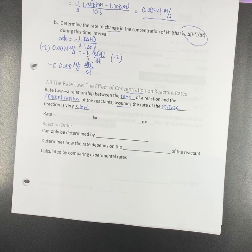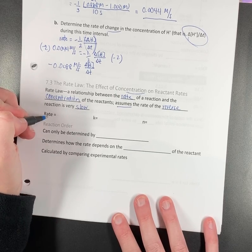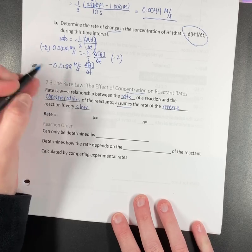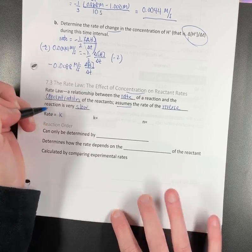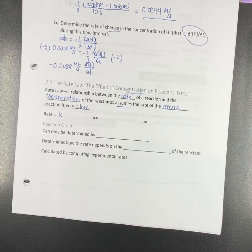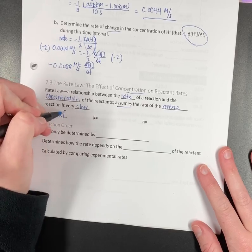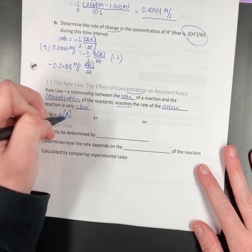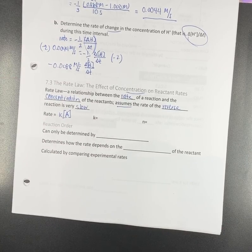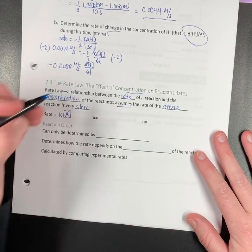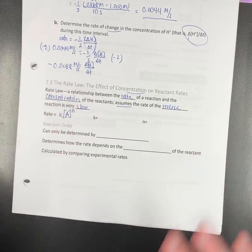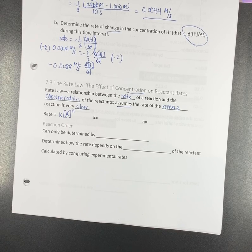Now when you write a rate law, the rate law is always going to be in this format: rate equals. So it's a rate equals, and it is K, this is a lowercase K. This is a rate of the concentration of something, and it's in brackets.